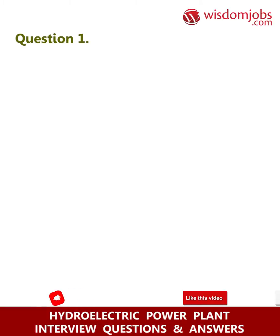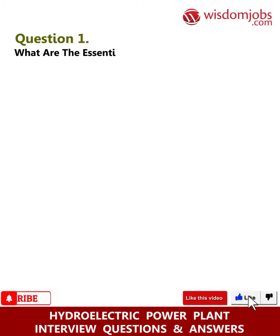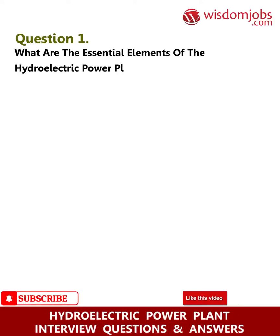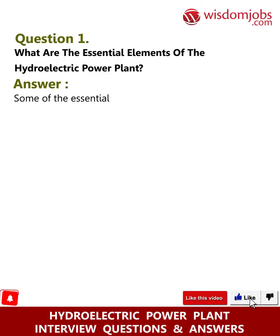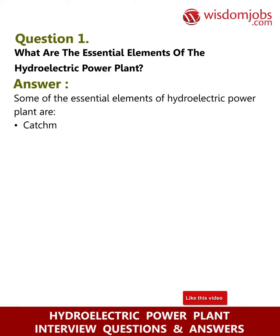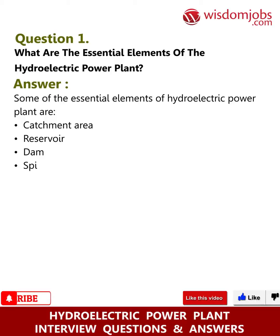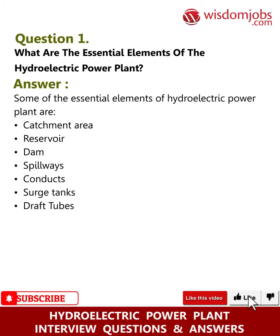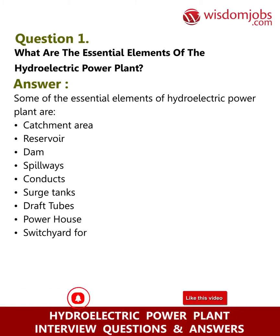Question 1: What are the essential elements of the hydroelectric power plant? Answer: Some of the essential elements of a hydroelectric power plant are catchment area, reservoir, dam, spillways, conduits, surge tanks, draft tubes, powerhouse, and switchyard for transmission of power.